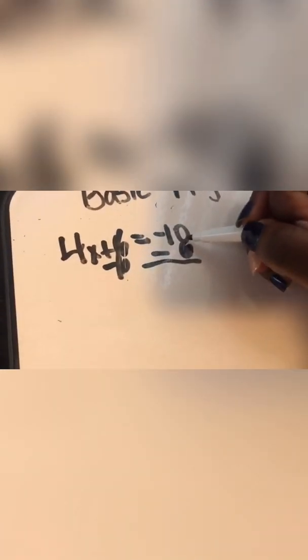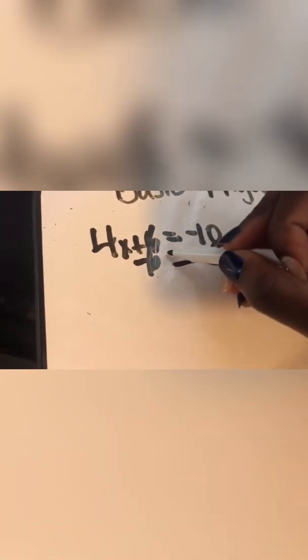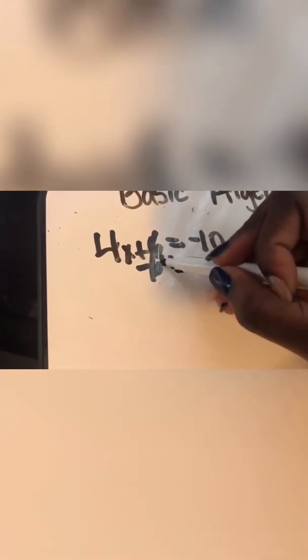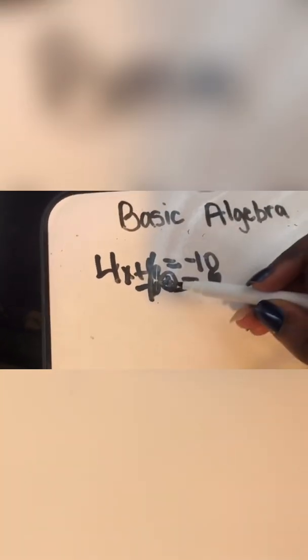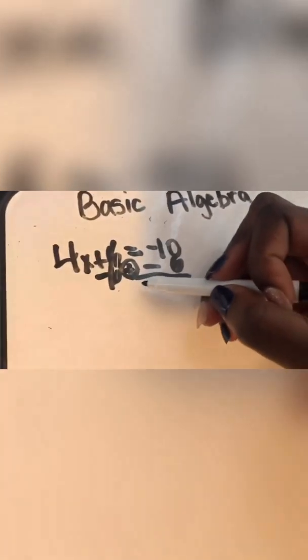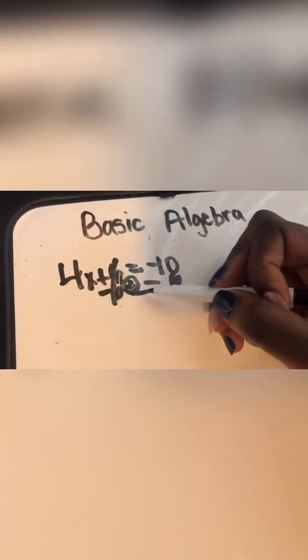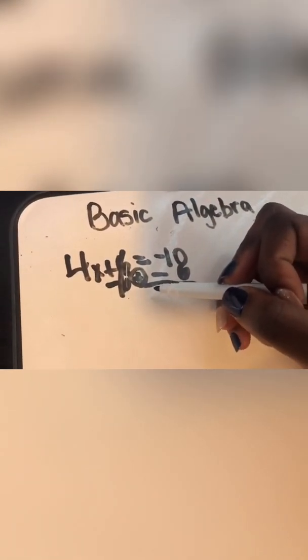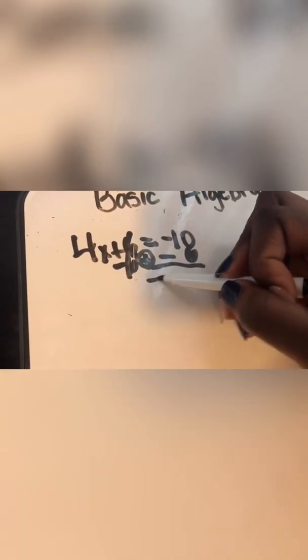And you're going to put negative six here. Negative 10 plus, remember there's an addition sign right here. We're going to circle that right here. Negative 10 plus negative 6 equals negative 16. What will it be you guys? Negative 16.